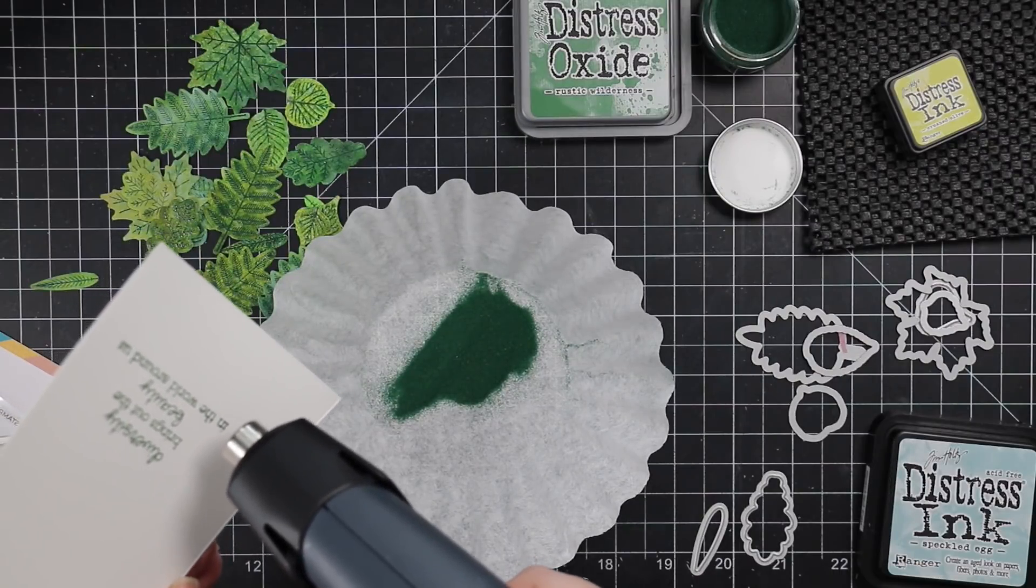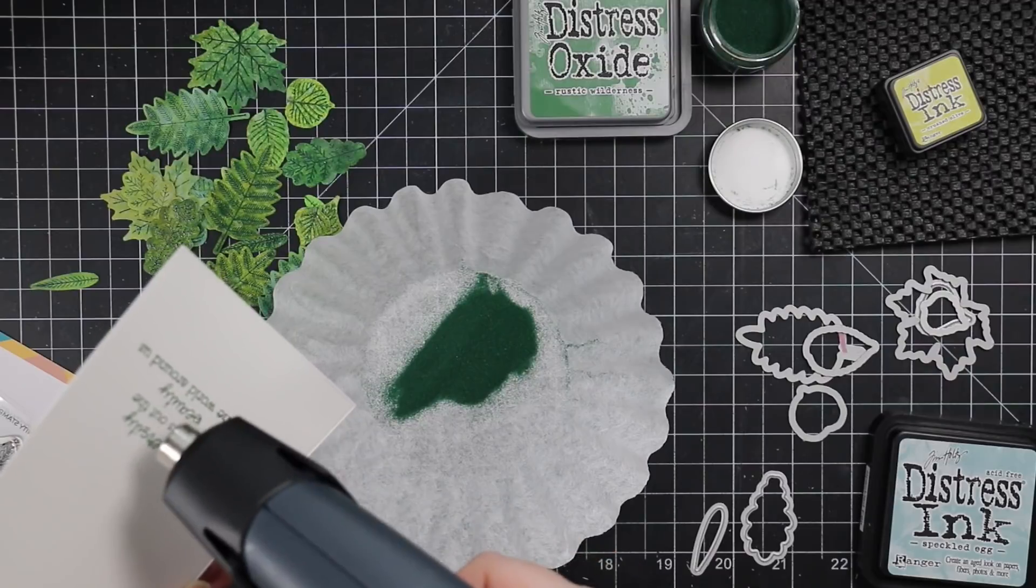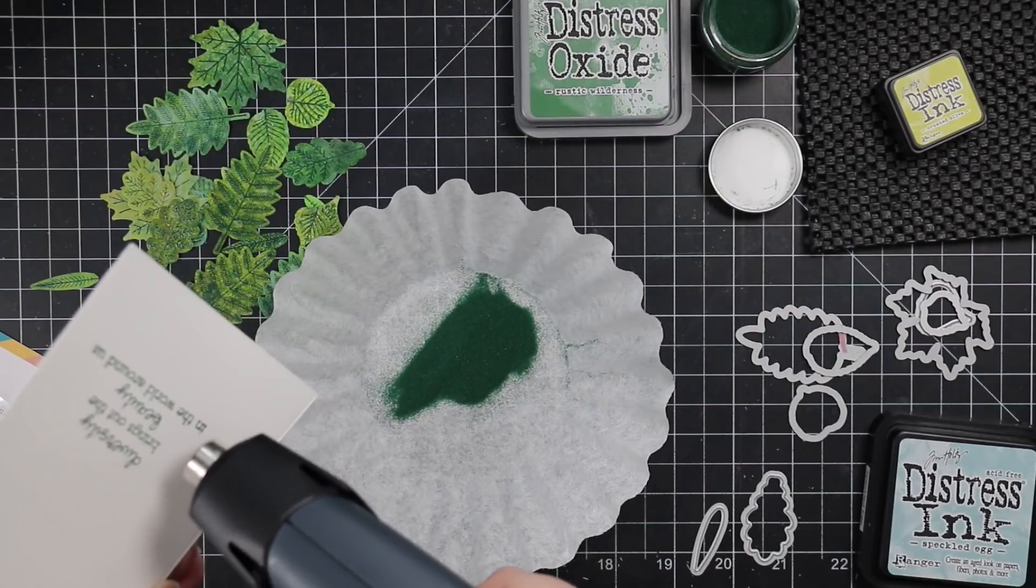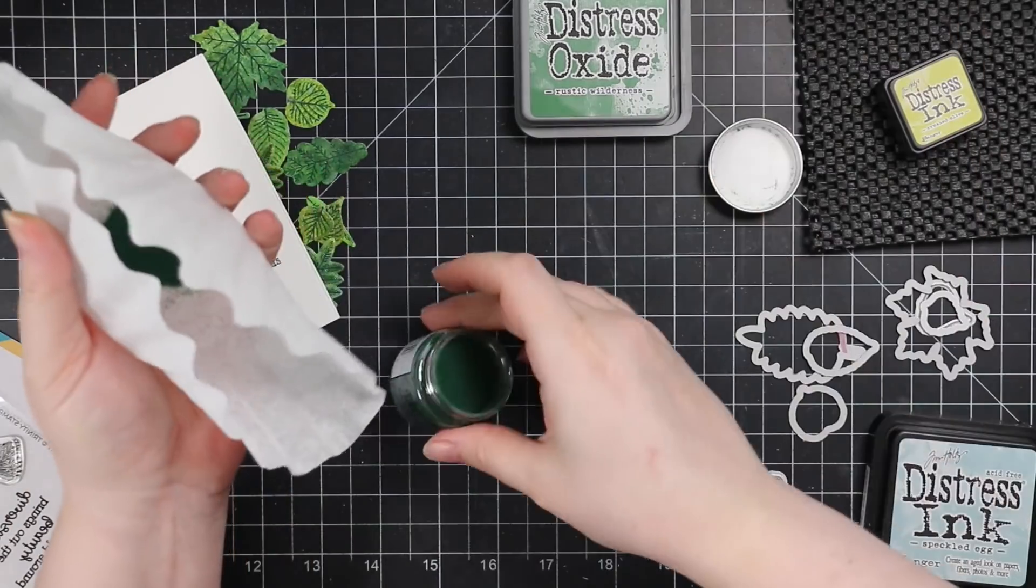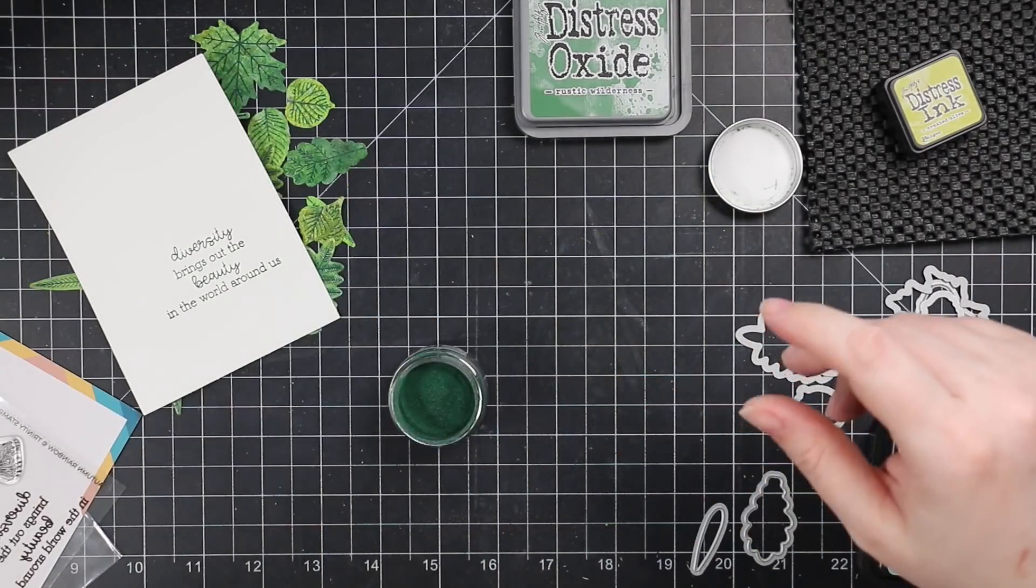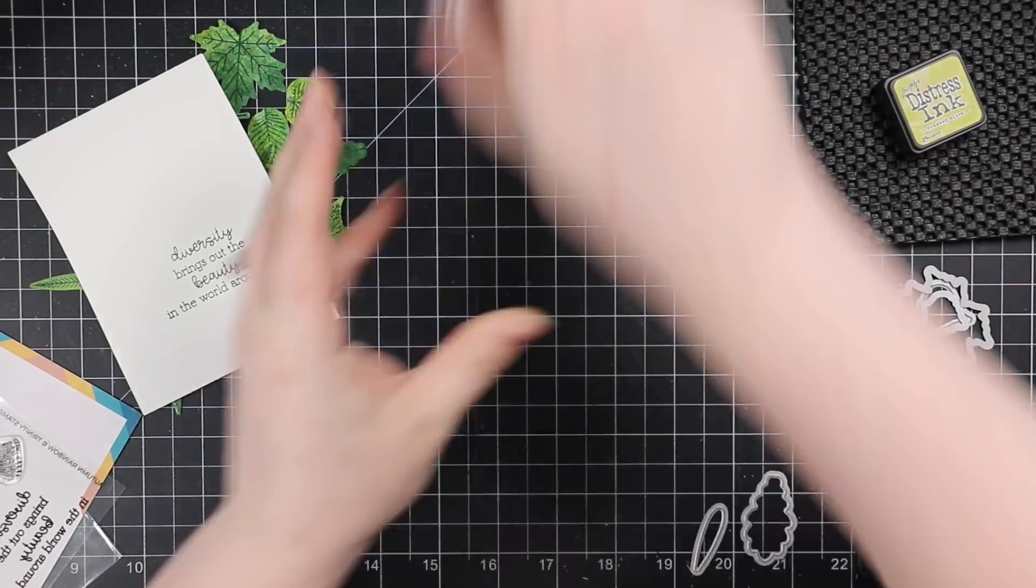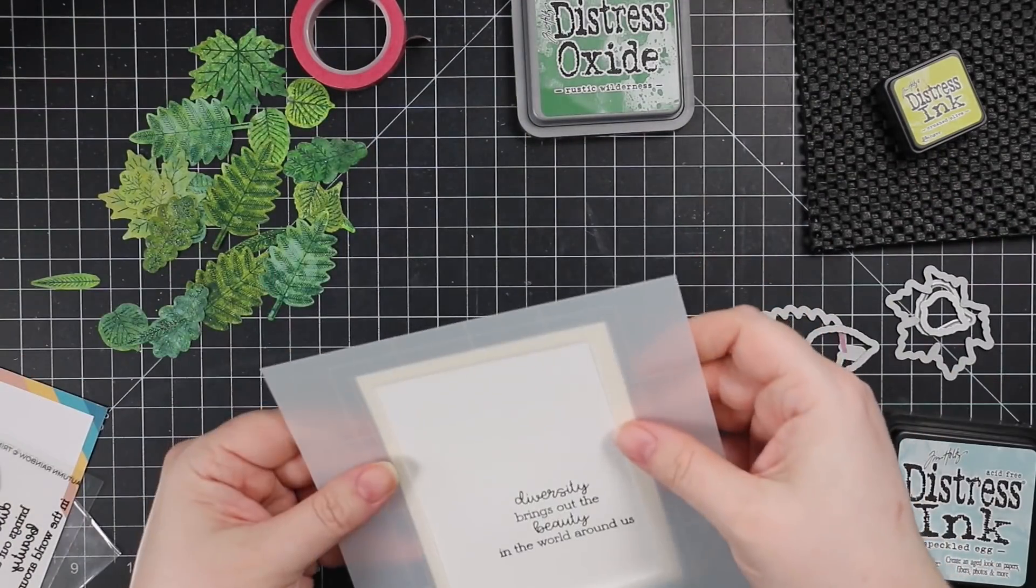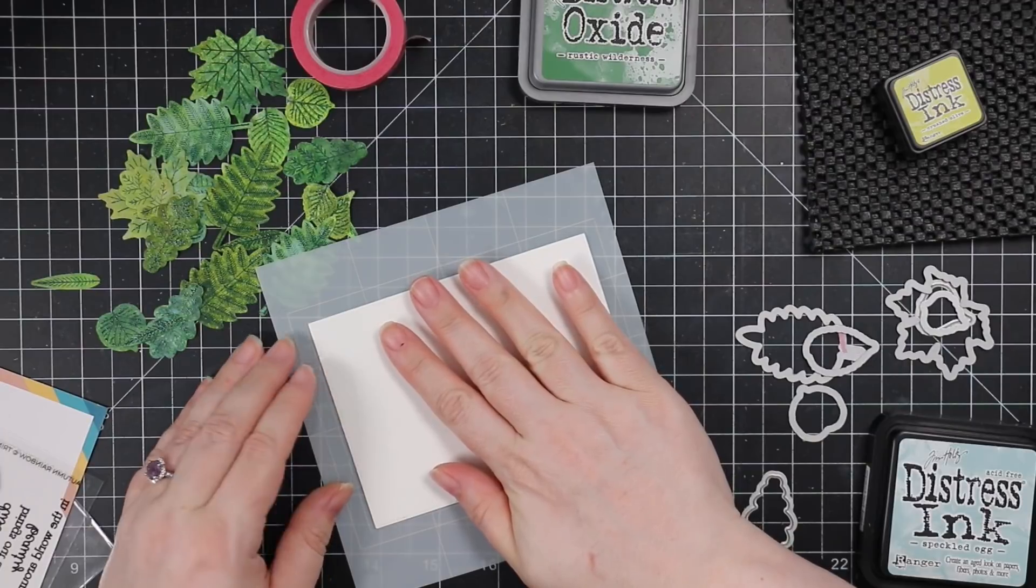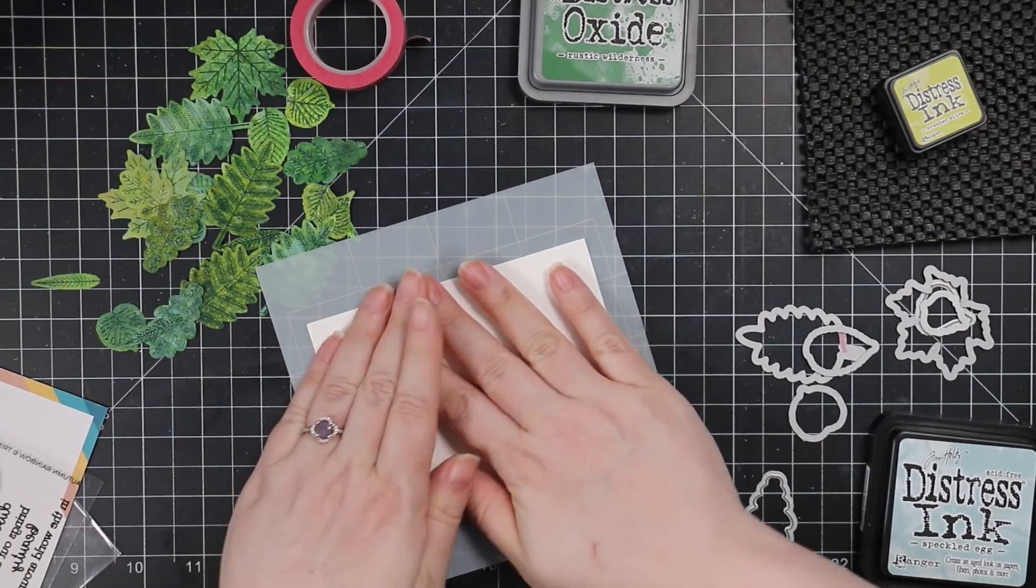You could just use clear embossing powder. I've shown that a ton of times, just stamping things with distress oxide inks, clear embossing powder. But if you have the coordinating glazes, the distress glaze embossing powders, it just gives it that little extra something. And especially with the new colors I have, cause I get the whole collection kit. Cause it's like, why not again, all the colors in all the mediums.